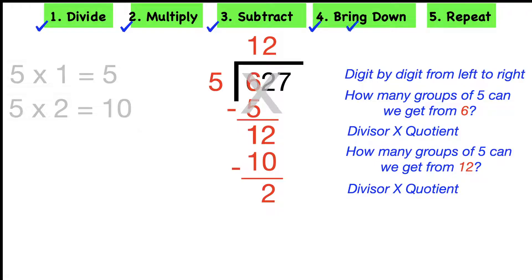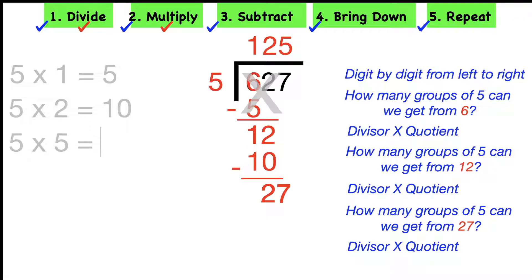And now step four. We're ready to bring down. And we have that seven still. We're going to bring down and repeat all those steps over again. We're ready to divide again. In this case, we're going to say, how many groups of five can we get from 27? Well, that would be five. Now we multiply our divisor times our quotient. In other words, five times five equals 25. The 25 goes under the 27. We're ready to subtract. 27 minus 25 is two.